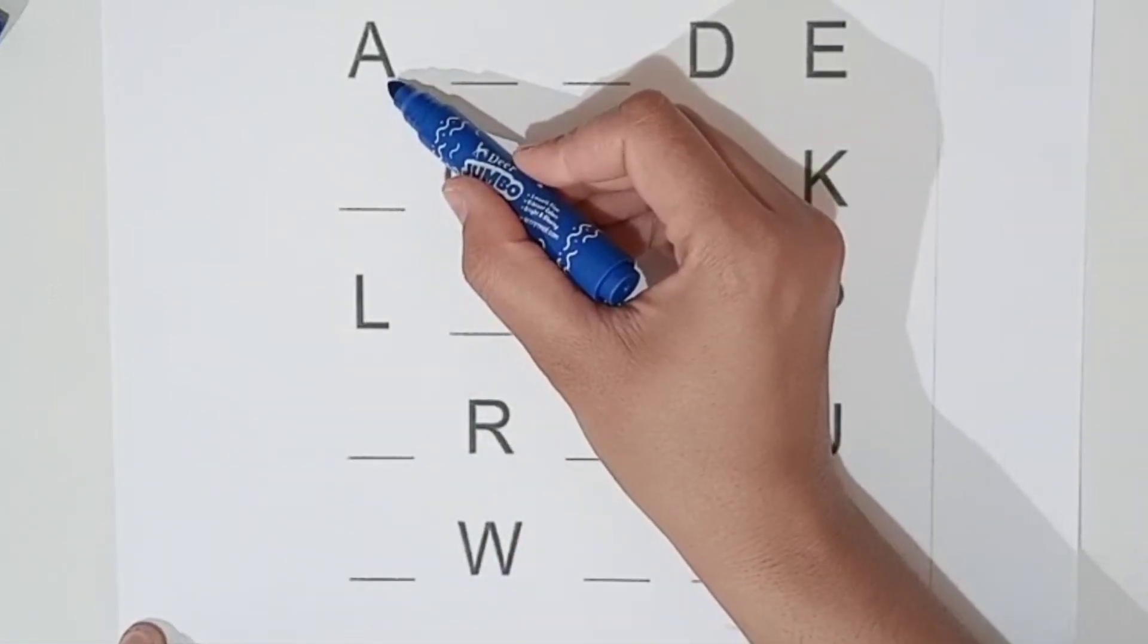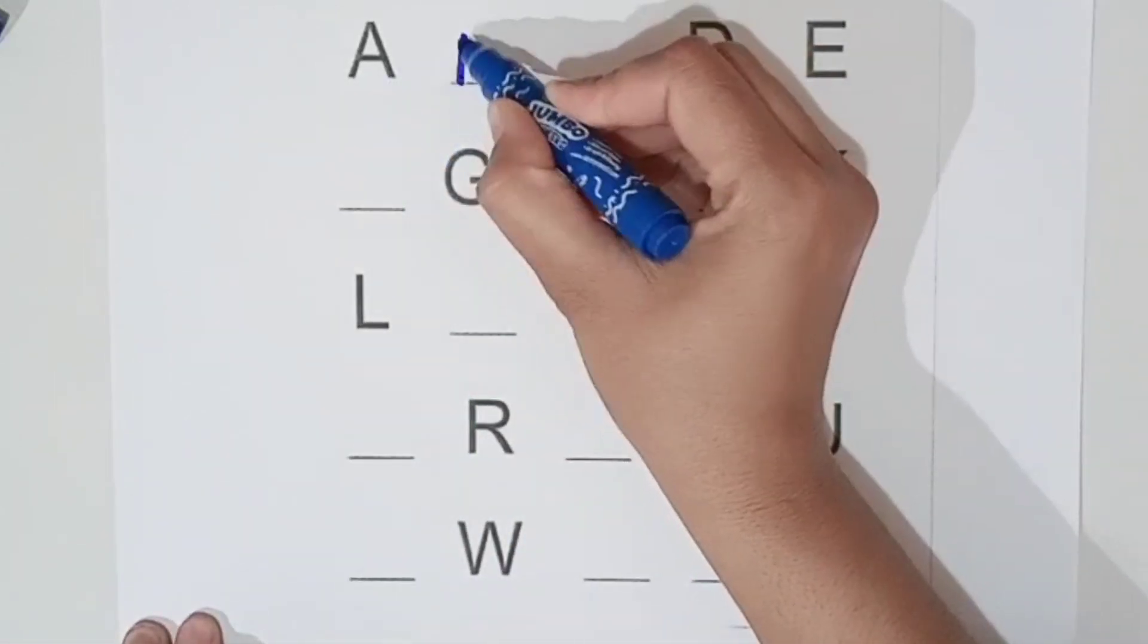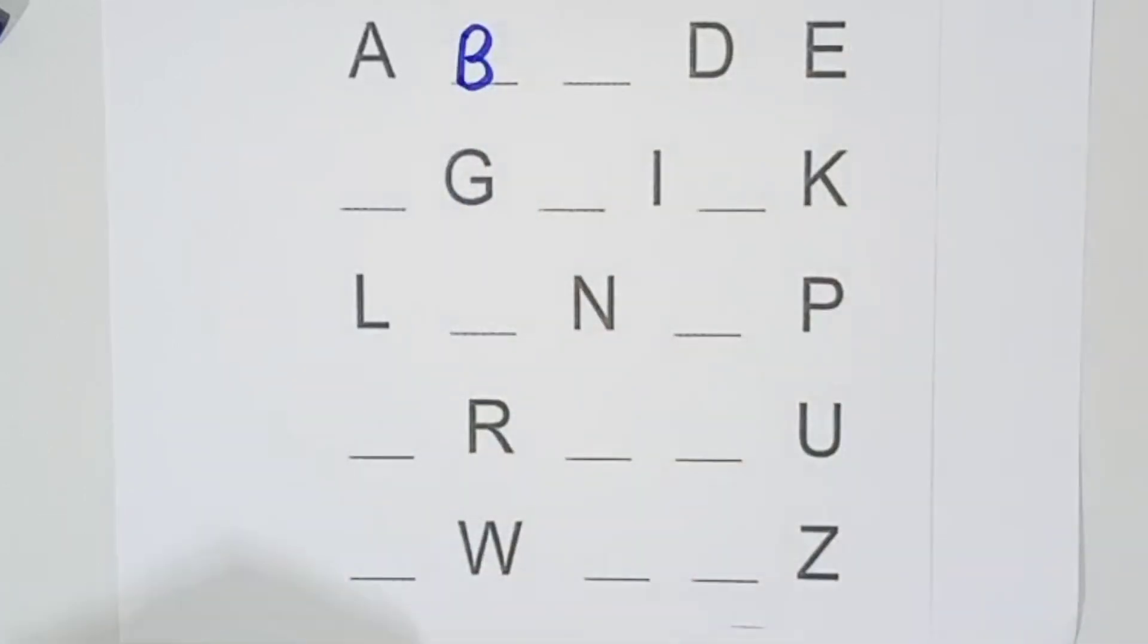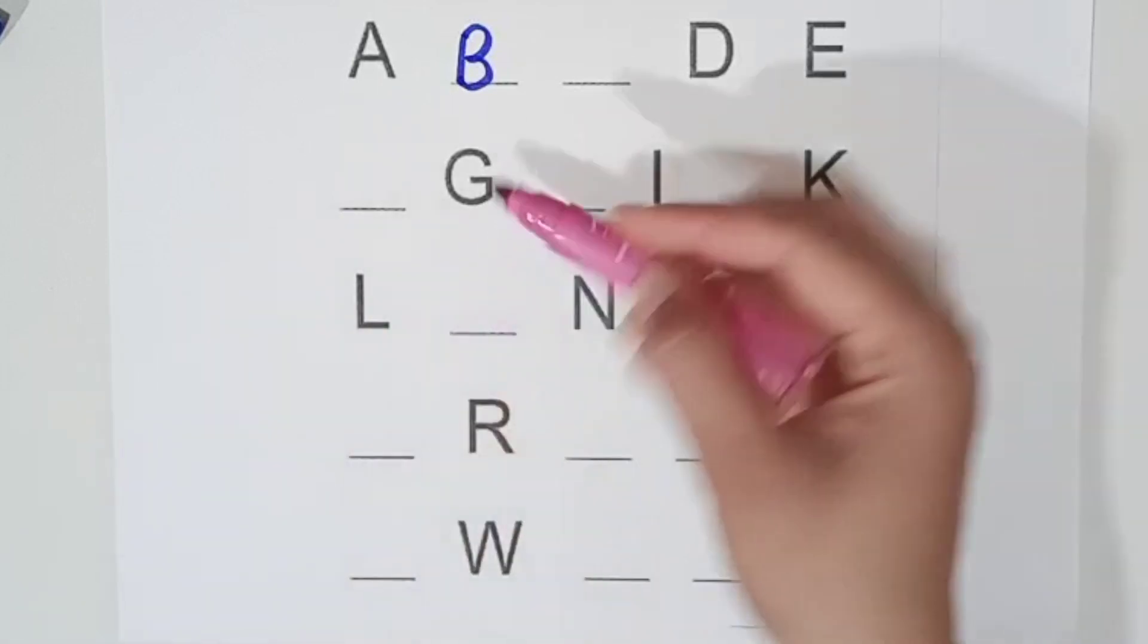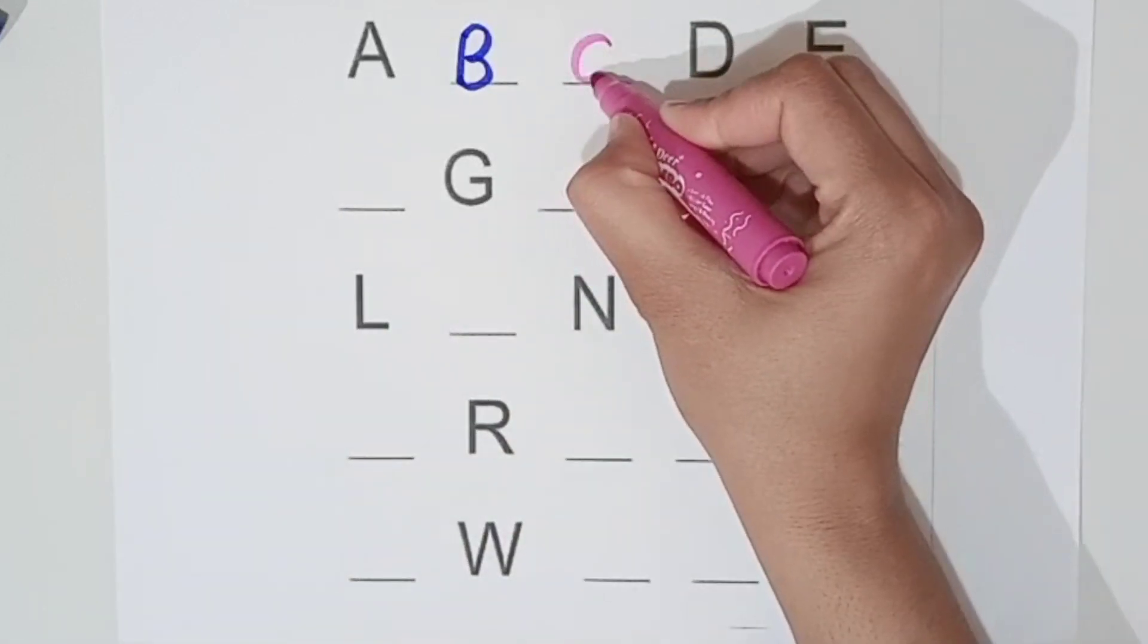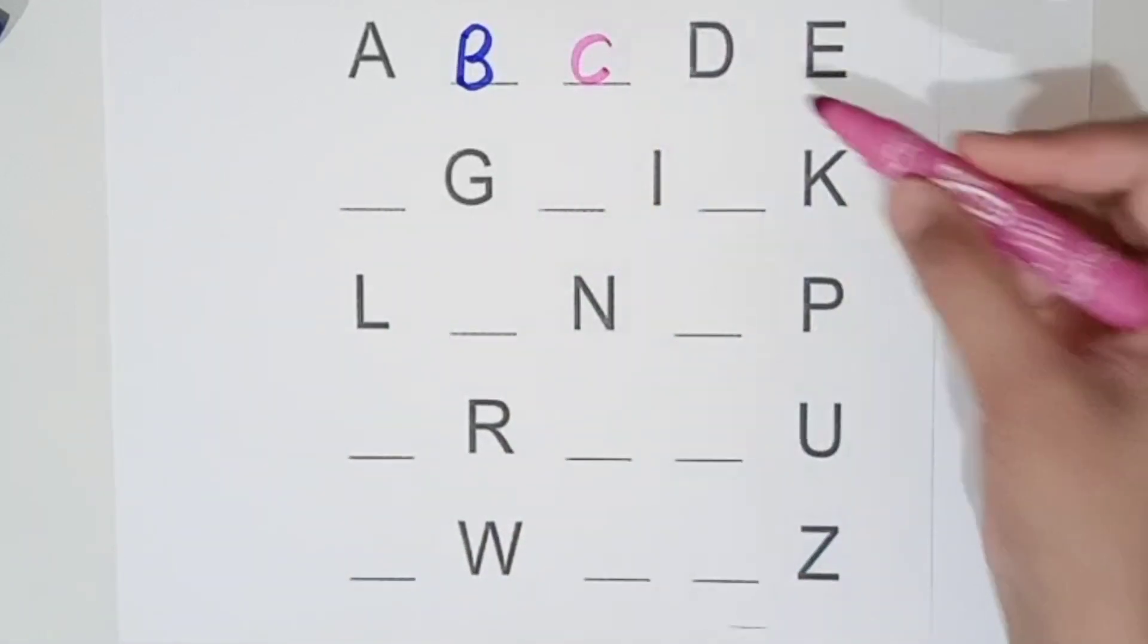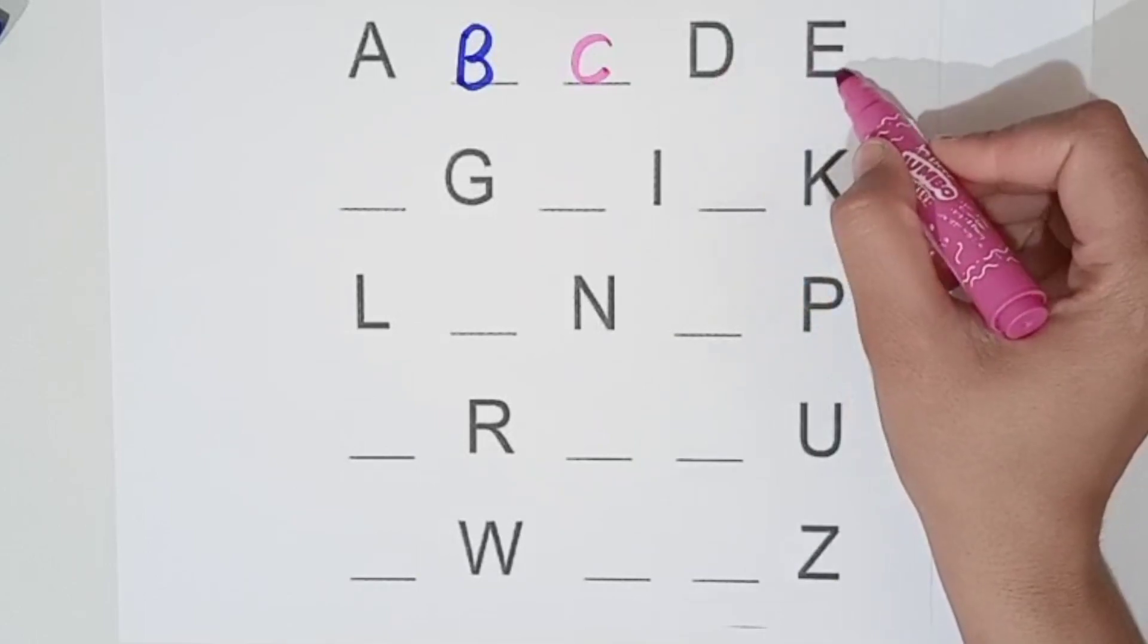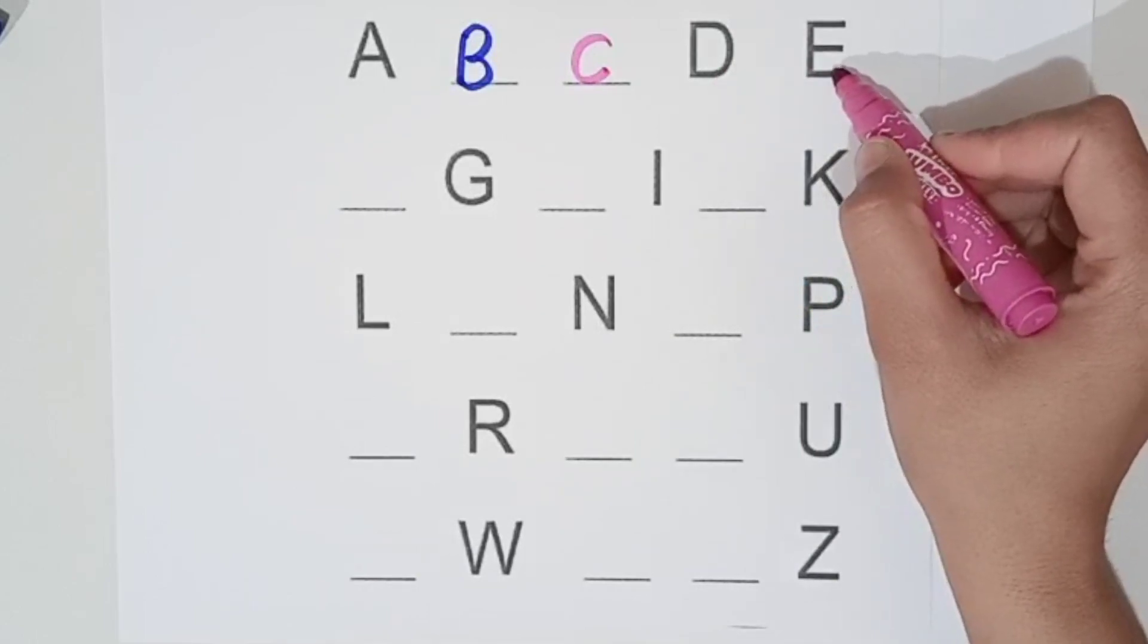A, A for apple. B, B for ball. Pink color. C, C for cat. D, D for dog. E, E for egg.